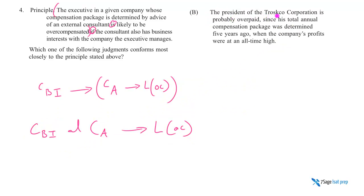B says the president of Trostco is probably overpaid. Good. Very good. Since this is our conclusion. Likely overpaid. Probably overpaid. So if you're going to conclude likely overpaid, that's my conclusion. Your premise just need to satisfy this and satisfy this. Let's see. Total annual compensation package determined five years ago by a consultant. By a consultant. When the company's profit all the time. Yeah, come on. You failed.